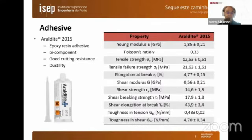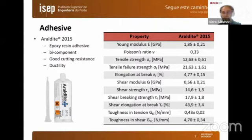Starting with the experimental testing, we use the adhesive Araldite 2015, whose mechanical properties were obtained previously and are already available in the literature. Tensile properties were obtained using the bulk test following the appropriate standards, and the shear properties were obtained using the thick adherent shear test.